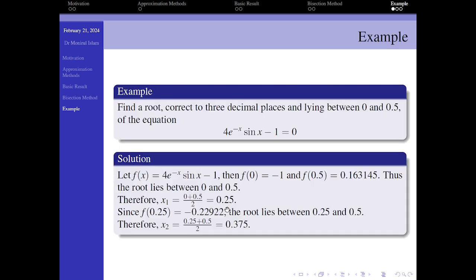So, for example, find a root correct to three decimal places lying between 0 and 0.5 of the equation 4e^(-x) * sin x - 1 = 0. f(0) is negative and f(0.5) is positive. That's why by the theorem, a root lies between 0 and 0.5.